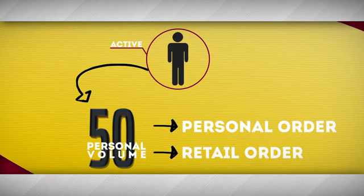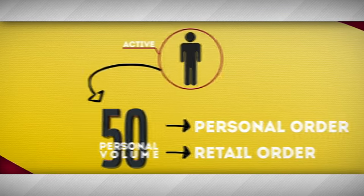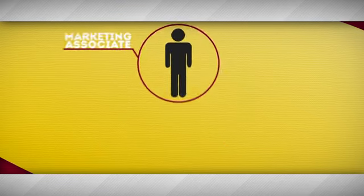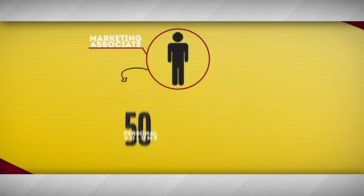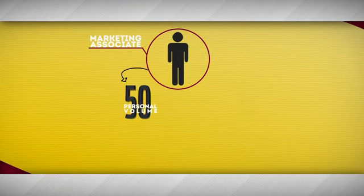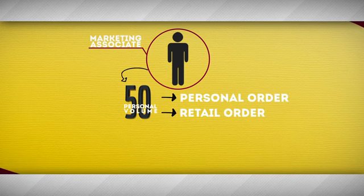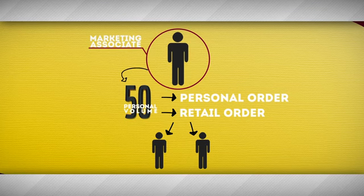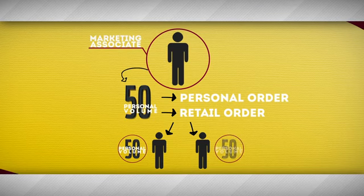Being qualified as a marketing associate requires you to generate a minimum of 50 in personal volume through a personal order or a retail order, and to have at least one personally sponsored distributor on both your left and right legs that generate at least 50 in personal volume within the given month.